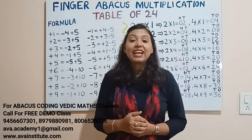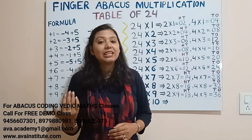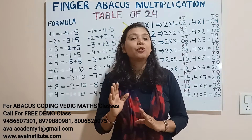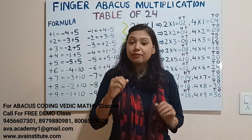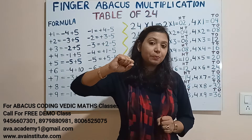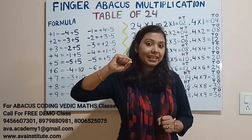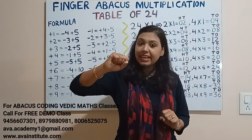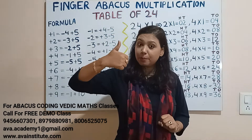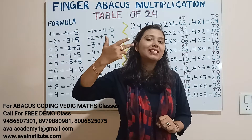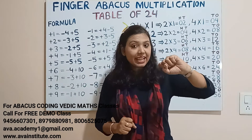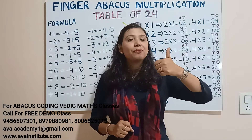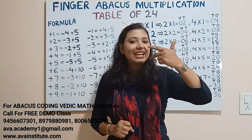So now let us start the class. Let us quickly revise the rules of Fingerbackers and multiplication. In Fingerbackers, our right hand represents the ones place and our left hand represents the tens place. In the right hand, the value of the thumb is 5 and the value of each finger is 1.